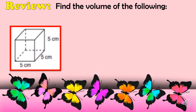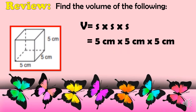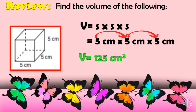For the next figure, this is an example of a cube, so we will use the formula V = S × S × S. Since each side of the figure is 5 cm, all sides are 5 cm. Multiplying 5 × 5 × 5 gives us a volume of 125 cm³.